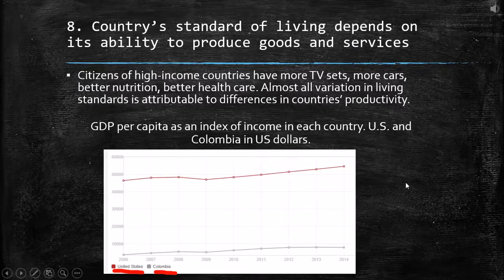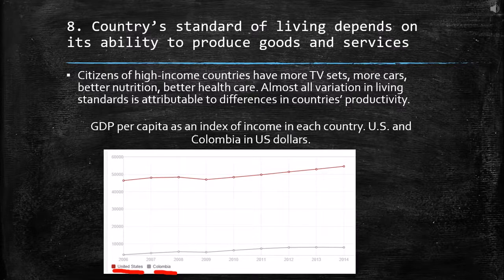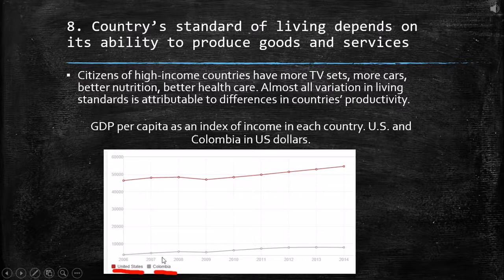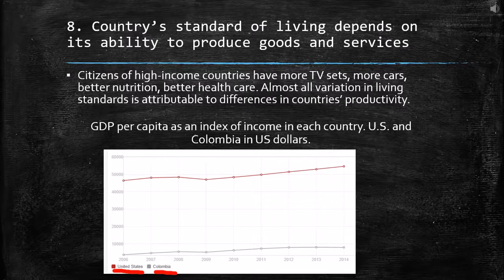The eighth principle is that a country's standard of living depends on its ability to produce goods and services. Citizens of high-income countries have more TVs, more cars, better nutrition, and better healthcare. Almost all variation in living standards is attributable to differences in countries' productivities. We can see this in a graph of GDP per capita — how much of a country's total production belongs to each citizen. For example, the United States and Colombia: Colombia's GDP per capita is about five times less than the United States', which is around $50,000, while Colombia's is around $10,000. We can see how production drives better quality of life.